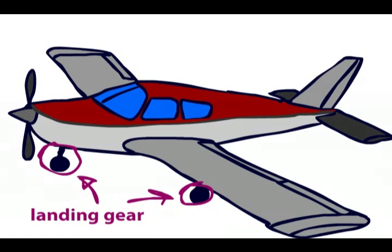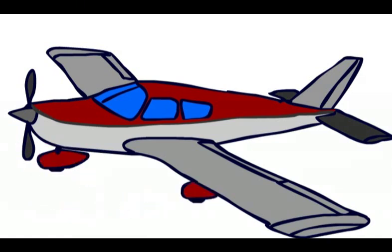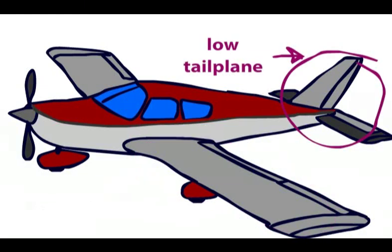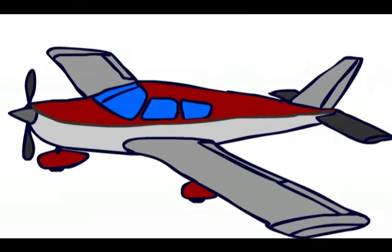So, that is the Cherokee described. It is a low-wing aircraft, which means the wings are attached to the lower portion of fuselage. It also has a low tailplane, meaning the horizontal stabilizer is attached to the lower part of the empennage, and a tricycle undercarriage, meaning it has a nose wheel.